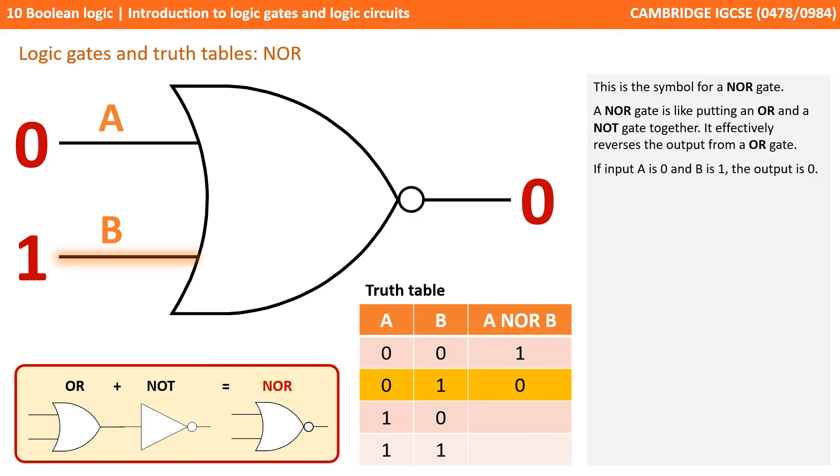If input A is 0 and B is 1, then the output is 0. If input A is 1 and B is 0, then the output is 0. And if input A is 1 and B is 1, then the output is 0.